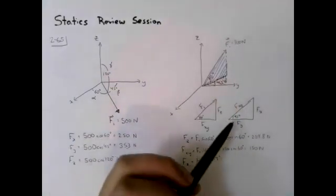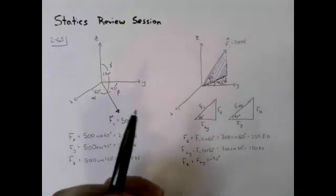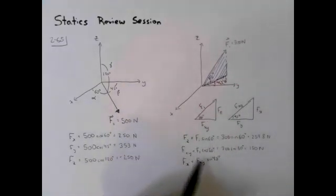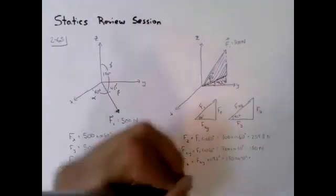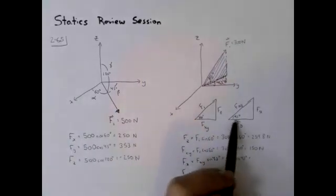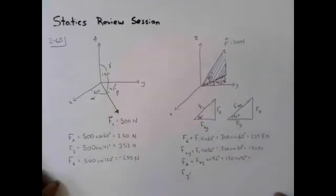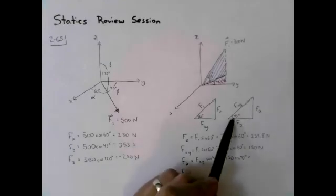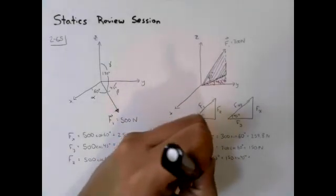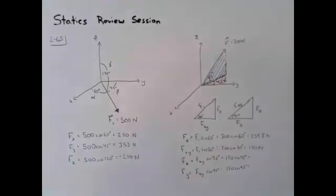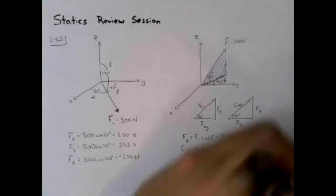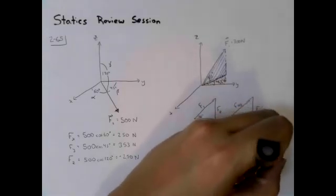So f of x would be f of xy sine of 45. In this problem in the book, they made it a little bit easy because sine and cosine of 45 are the same. But if the angle were different, it's really important for you to get these numbers correct. So we have 150 sine of 45. Likewise with f of y, notice that y is the adjacent side. So the adjacent side requires we use a cosine. So f of y would be f of xy cosine of 45. That's 106.1 newtons.